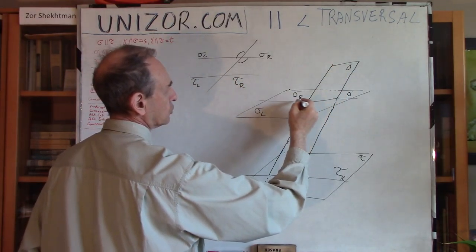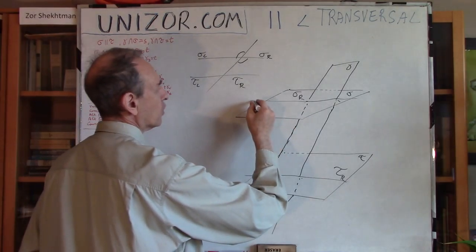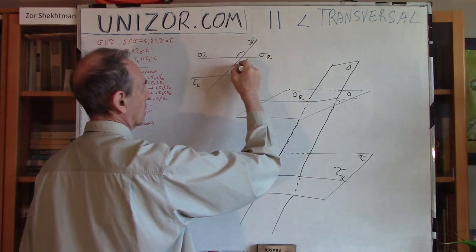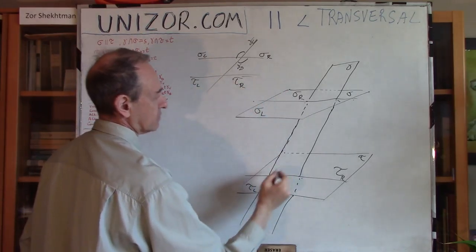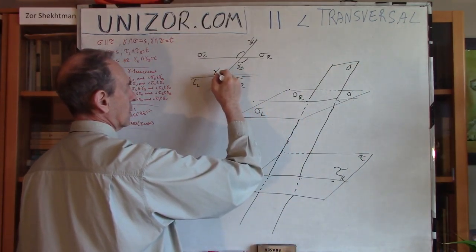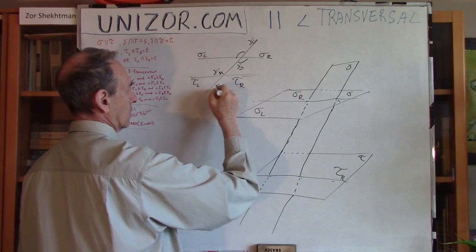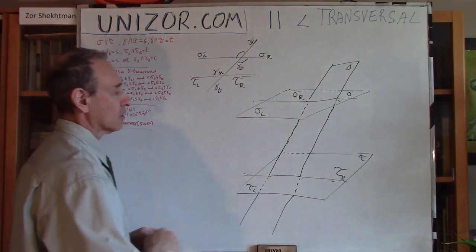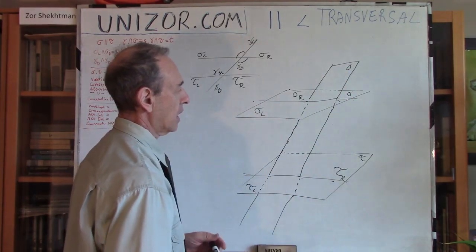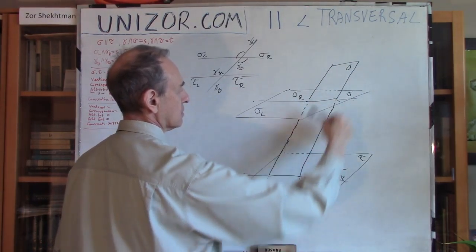Gamma will have two dividing lines, which split it into different parts. If I consider one line as the division, I'll call the pieces gamma-up and gamma-down. The same names gamma-up and gamma-down are used depending on context — which line of intersection I'm considering as the division determines which piece is up and which is down.